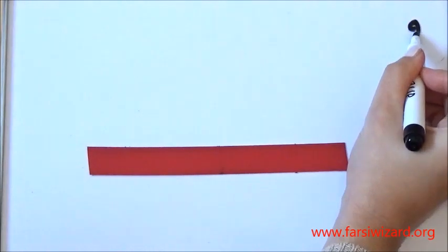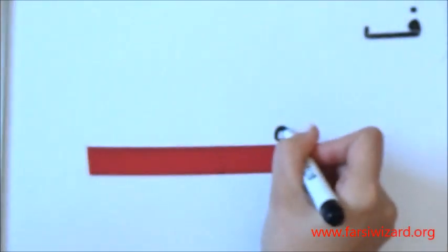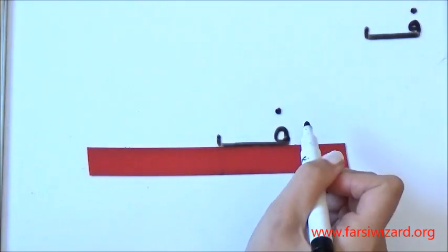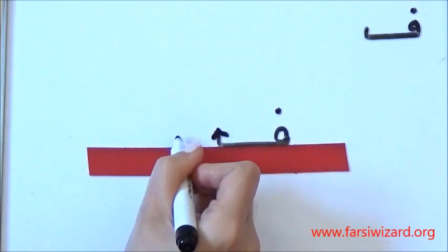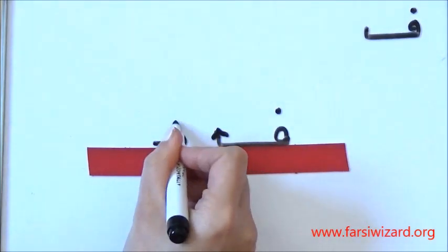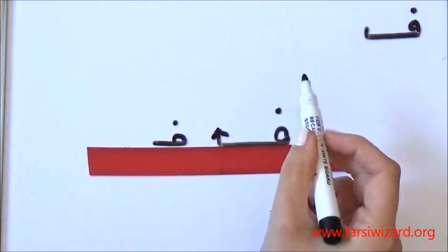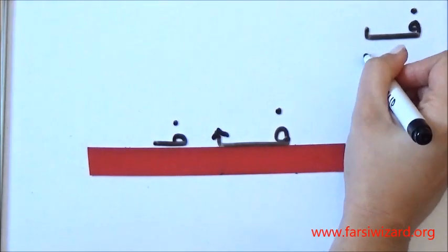Let's see how we are supposed to write these letters. Let's start with Fe. You will start above the reference line, both for the complete version of Fe and for the small version of Fe. It's very easy. A circle, a line, and then a dot on top.